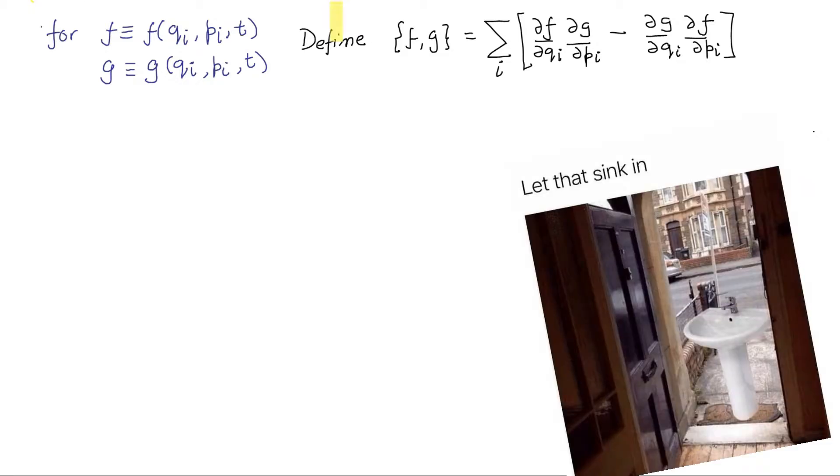Now for two quantities, F and G, which depend explicitly on the phase space coordinates and time, we define their Poisson bracket by this expression. I'll wait for a moment to let that sink in.